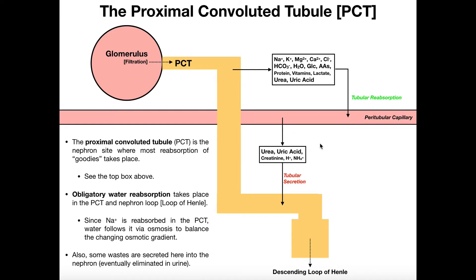Tubular secretion is the opposite process of reabsorption. Some substances we have excess of or that are waste products — for example, ammonia (NH4+, or ammonium) and creatinine are waste products. Urea and uric acid, depending on their concentration, may also need to be removed. Urea is a product of amino acid breakdown, and when it builds up, it can cause problems for neurons and lead to their death. The same is true of ammonia. Uric acid can cause gout if too elevated, and the same applies to creatinine.